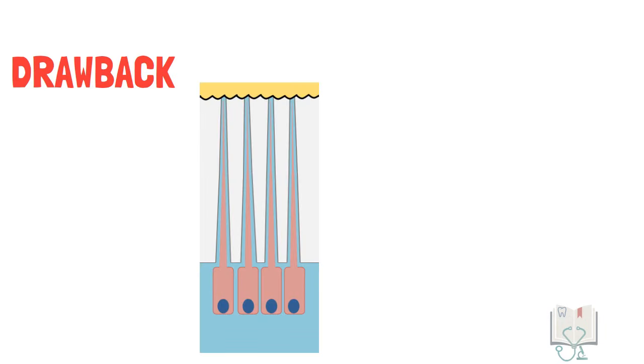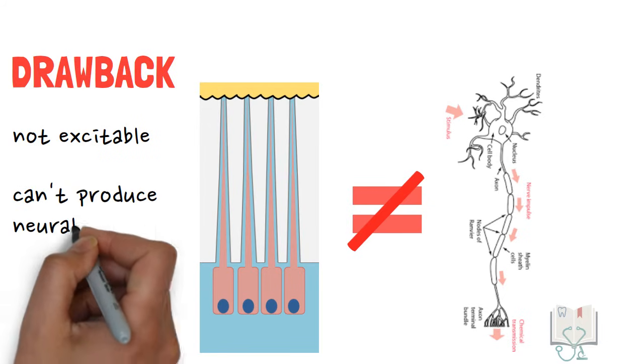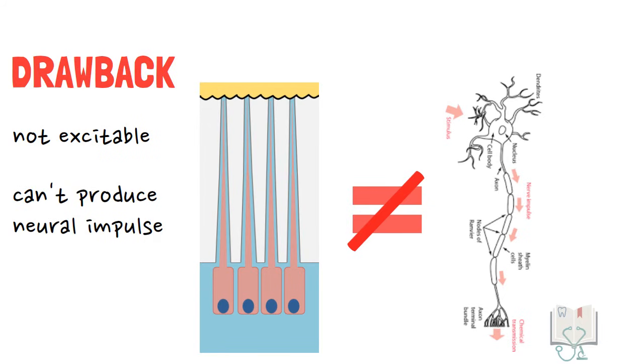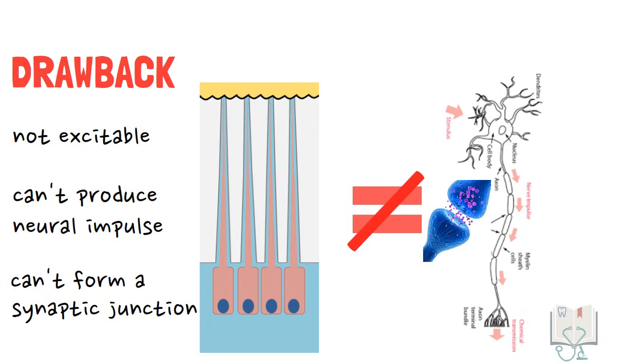The drawback of this theory: odontoblasts are not like nerve tissue. They are not capable of being excited and producing a neural impulse. Moreover, there are no neurotransmitter vesicles in the odontoblastic process to form a synaptic junction with nerves.